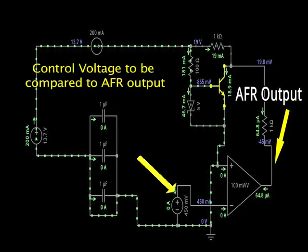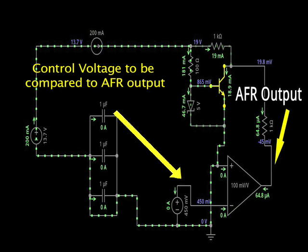In AC signal applications this seldom matters. If high precision DC operation is required, as in AFR sensors however, these voltage drops need to be considered.